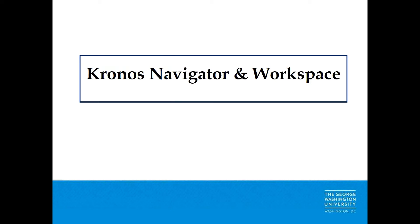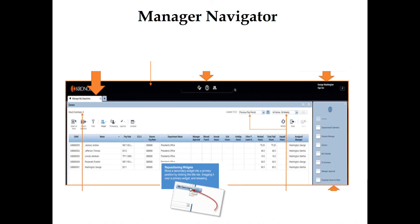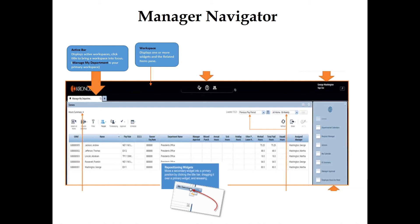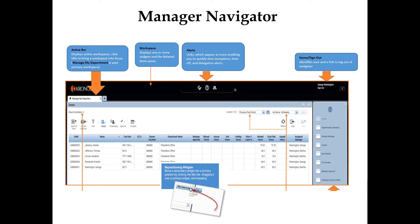Kronos Navigator and Workspace. This is what your Manager Navigator looks like. At the very top you will see Manage My Department — that is your active bar. It displays your active workspaces. Click the title to bring a workspace into focus. Manage My Department is your primary and default workspace. It displays one or more widgets and the related items pane. Alerts appear as icons enabling you to quickly view exceptions, time off, and delegation alerts. Your name and sign-out link identify the user and allow you to log out.